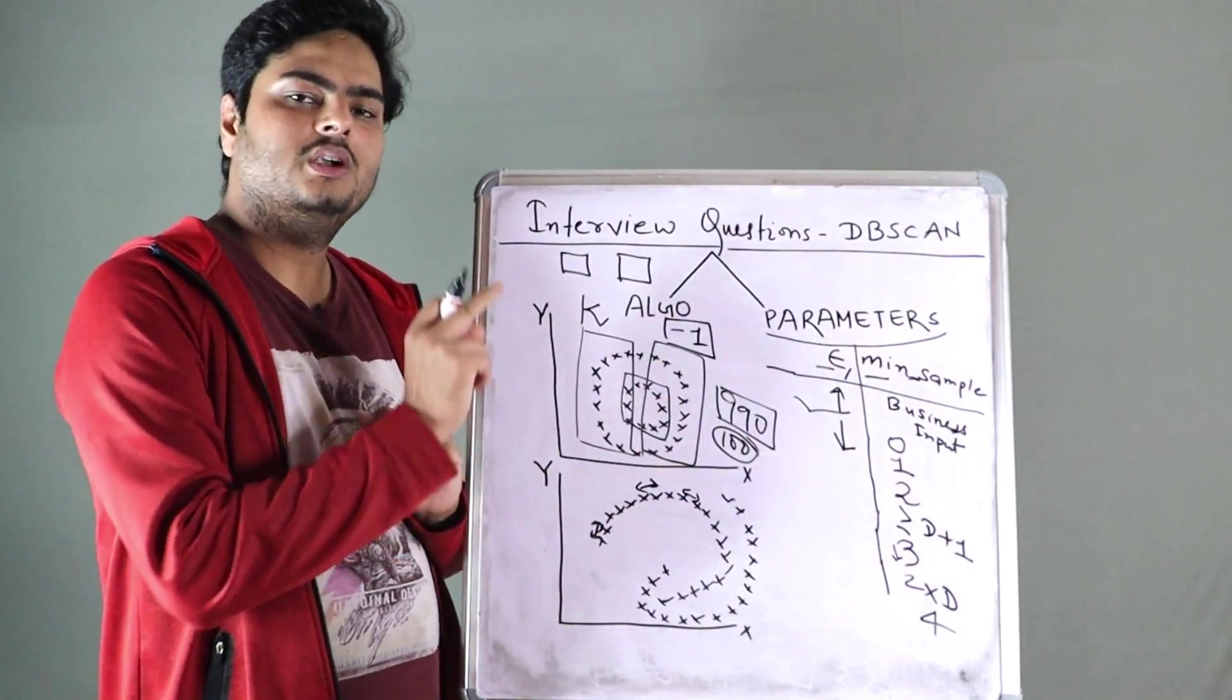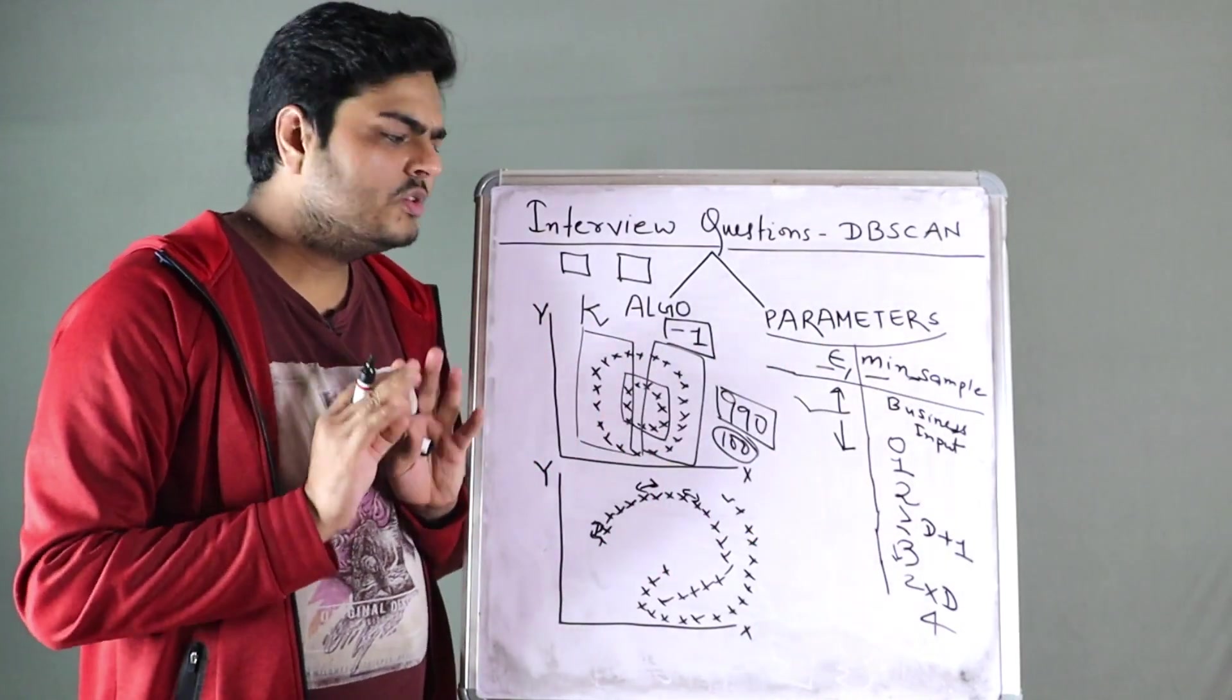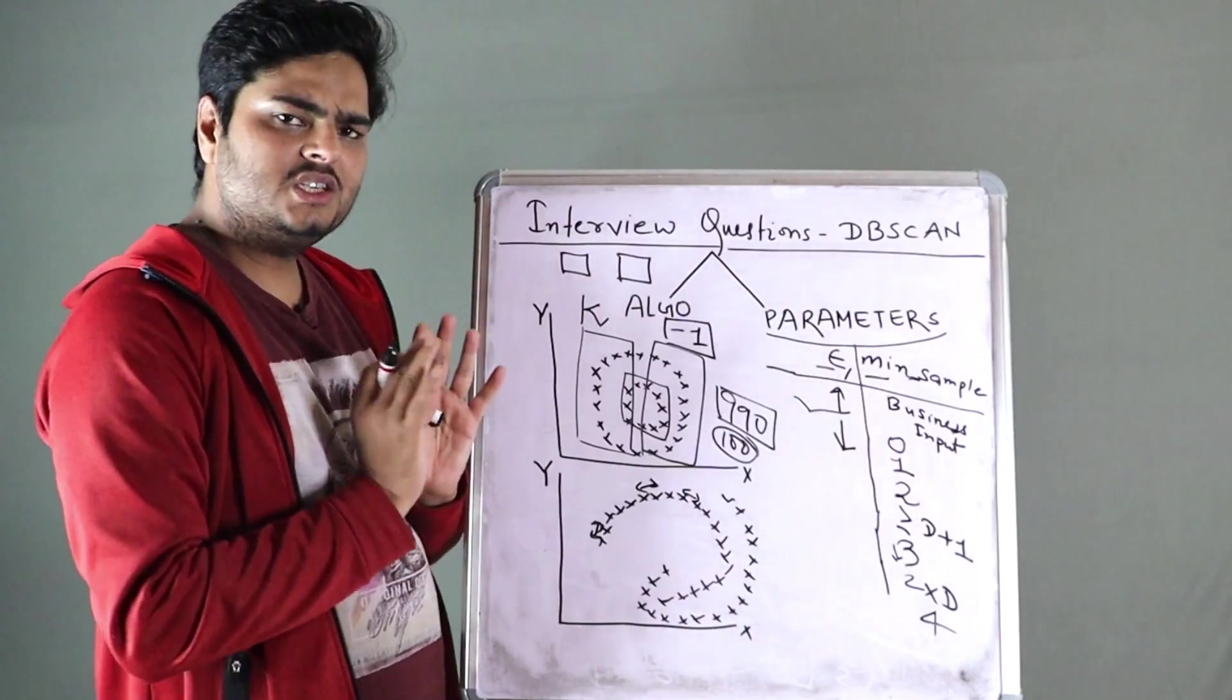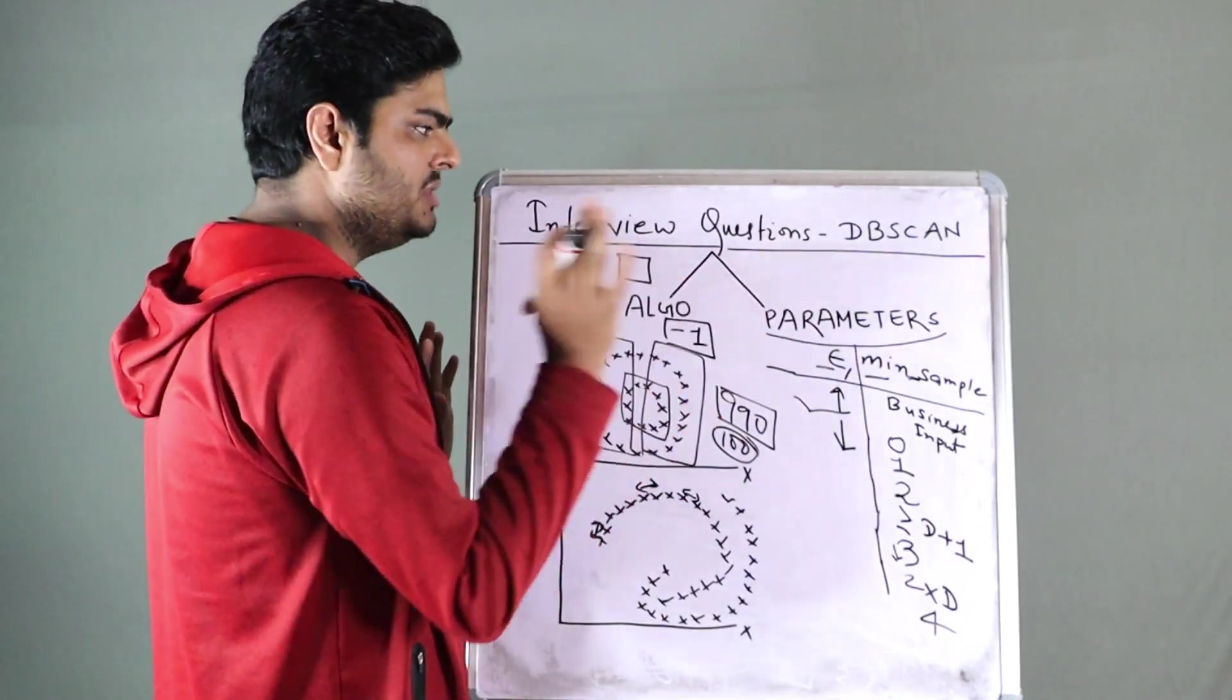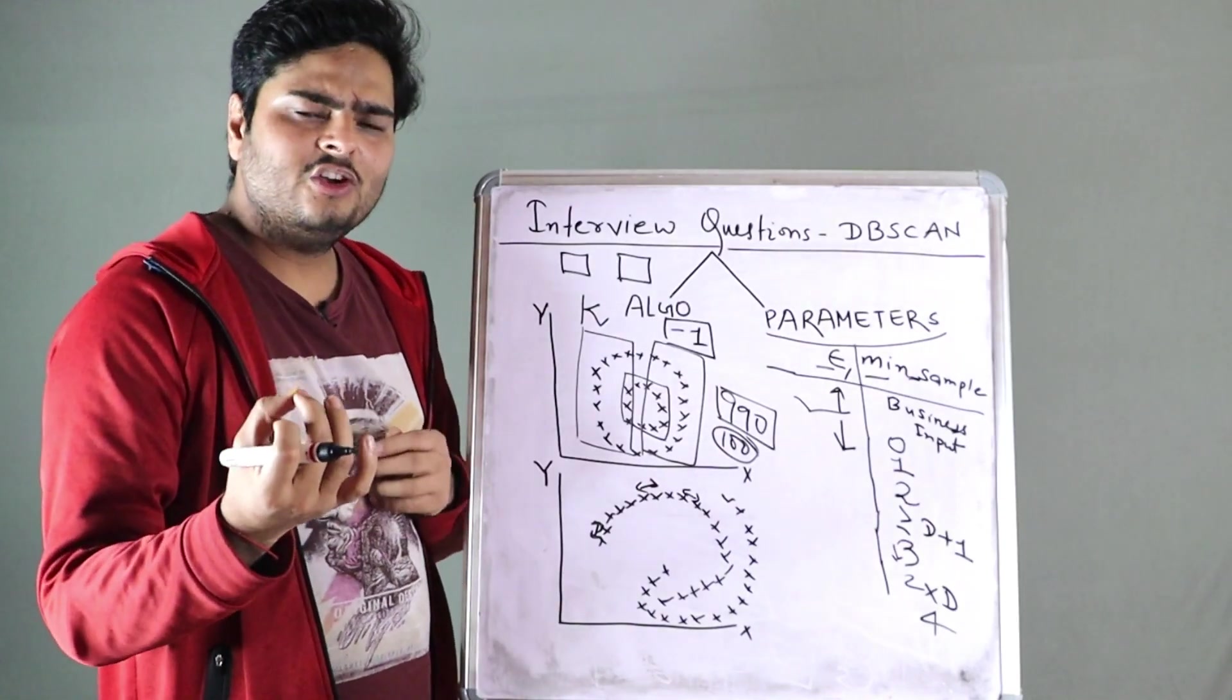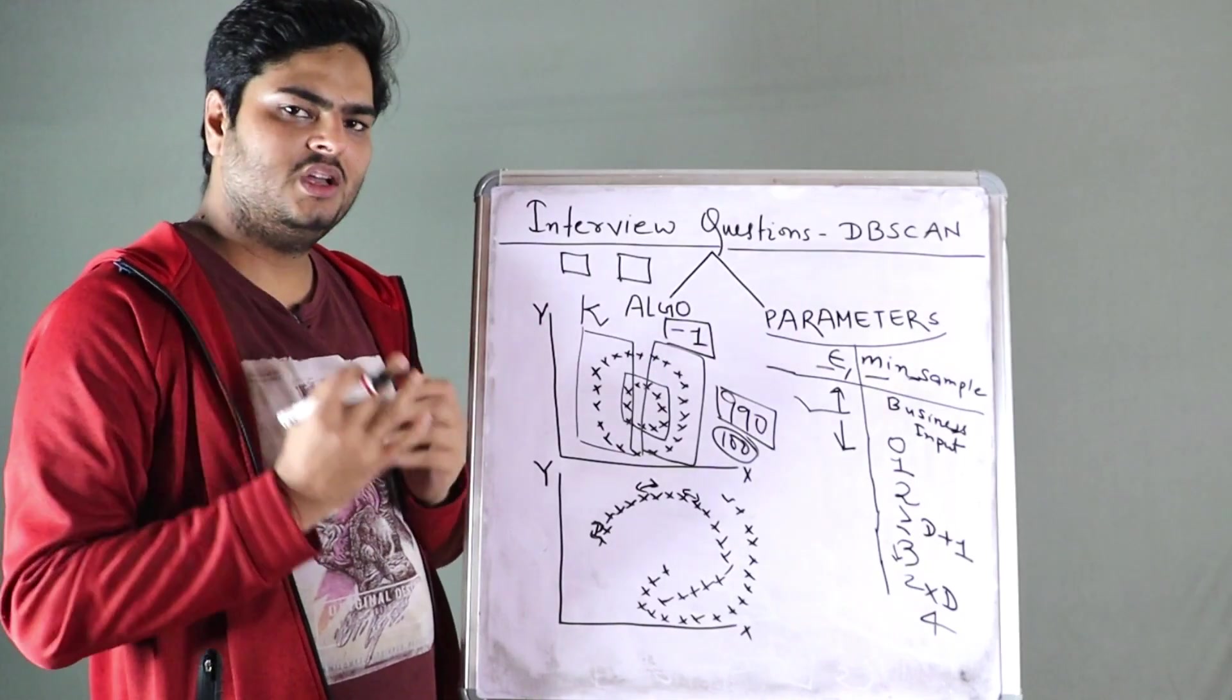And if you have any confusion in understanding what is epsilon and what is minimum number of sample, kindly watch my first video on DB scan, where I have explained these things in detail. So these are the areas guys, which interviewer will try to touch, understand and see if you understand parameter, if you understand how to optimize it and all those stuff in algorithm side and parameter side. I hope you like this video guys,